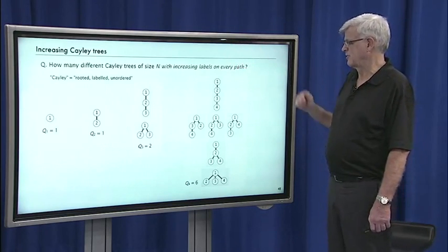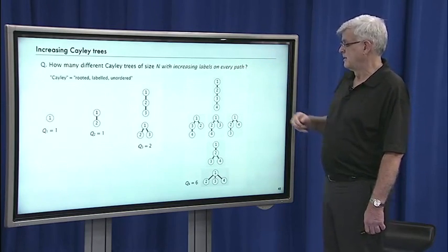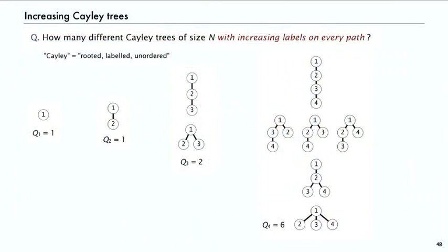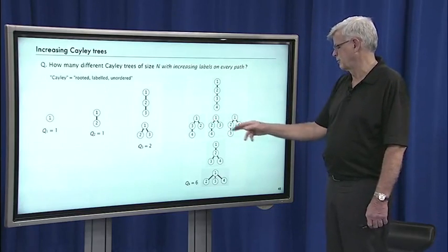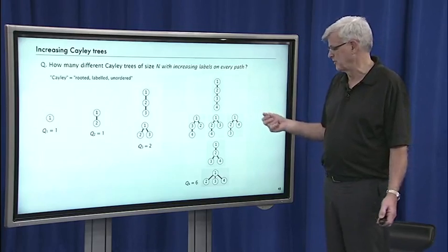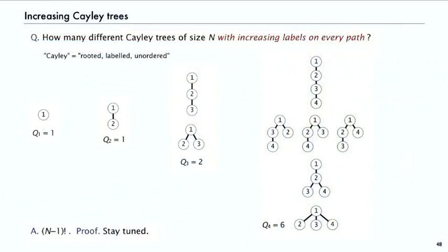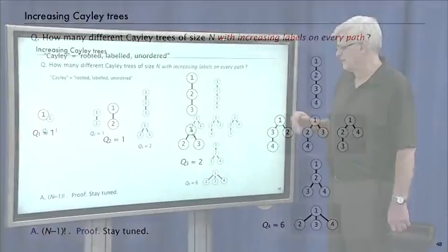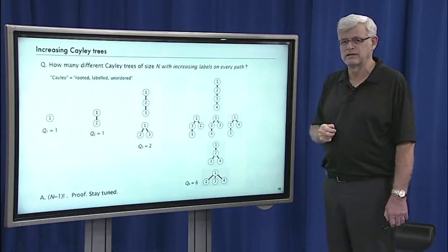We can also look at increasing Cayley trees: how many Cayley trees of size n have increasing labels on every path? Since order doesn't matter, one must always be at the root. The children could be labeled 2 and 3 with 4 going to one of them, or children labeled 2 and 4 — but children can't be 3 and 4 because there's no place to put 2. There turn out to be six possibilities for size four, and the number of increasing Cayley trees is (n-1) factorial. With analytic combinatorics there will be a uniform way to derive this.